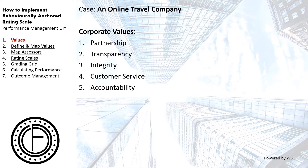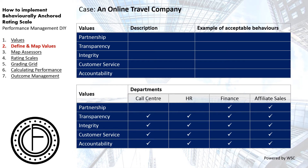The next thing you want to do in setting up BARS within an organization is to define and map these values. There are two distinct ways you can go about this: a common approach, or an innovative approach. The common approach is for people to define the values and provide examples of acceptable behaviors. Once the values are defined, a questionnaire or survey is built around them and deployed across the organization, irrespective of department or division.